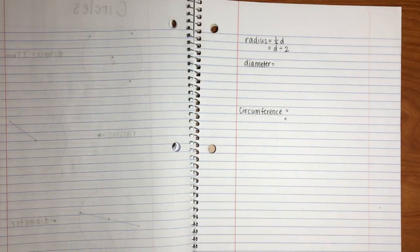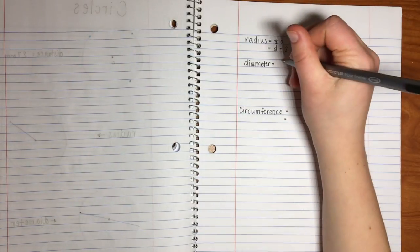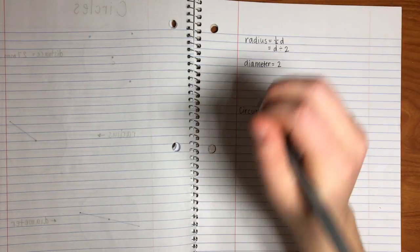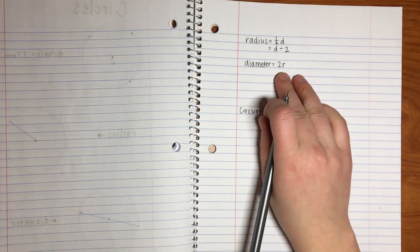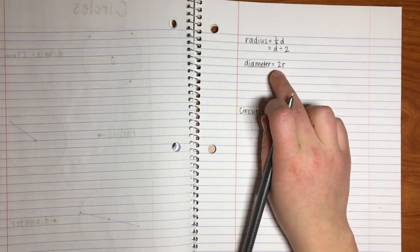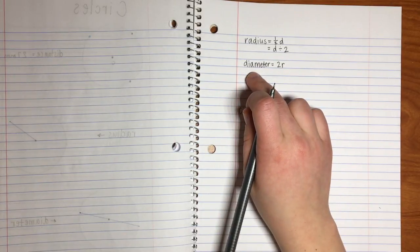We know that the diameter is twice the radius, so for this we represent radius as 2r. So we know that if you are given a radius, you can multiply it by 2 to get the diameter.